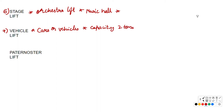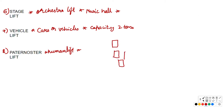Next is the paternoster lift, also called a man lift or human lift. This is a special type of elevator consisting of a chain of open compartments that move slowly in a continuous loop — up and down inside a building without stopping. Any passenger can step on or off at any floor.